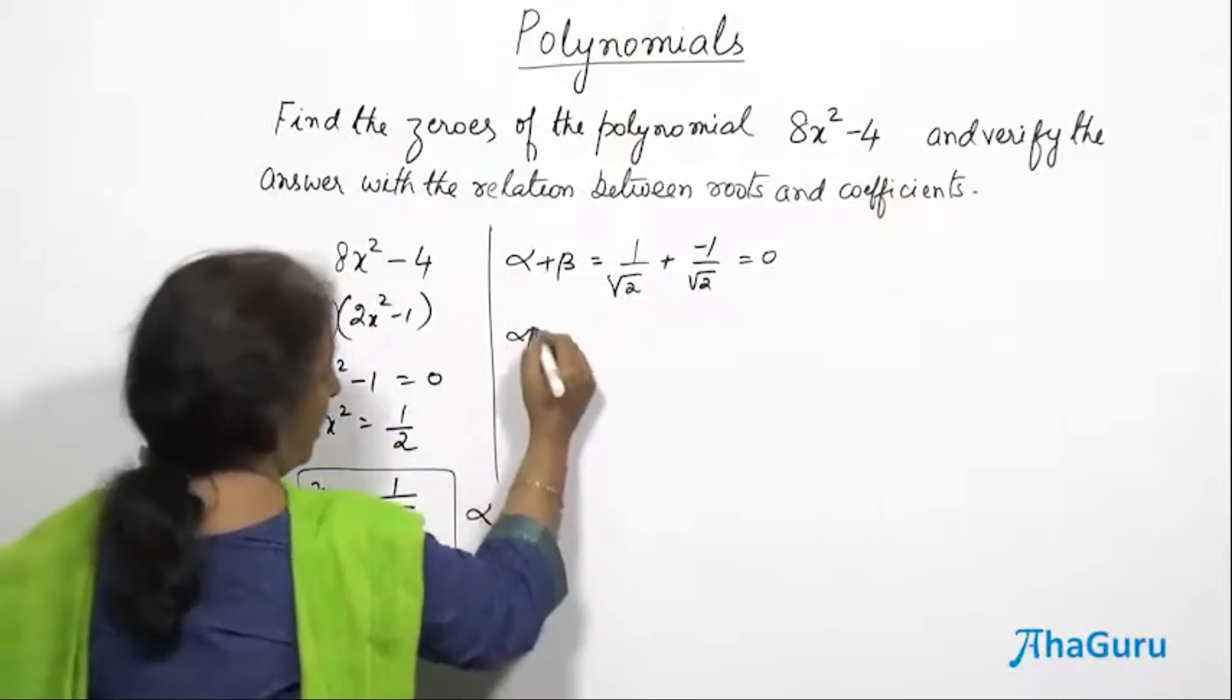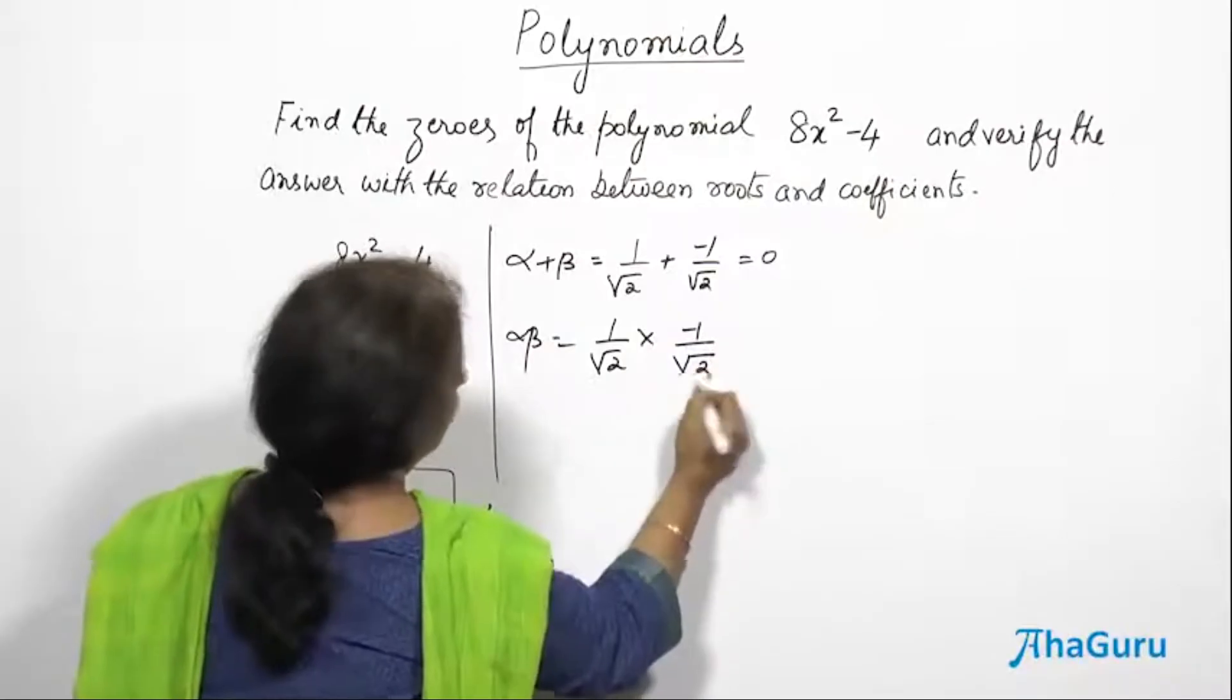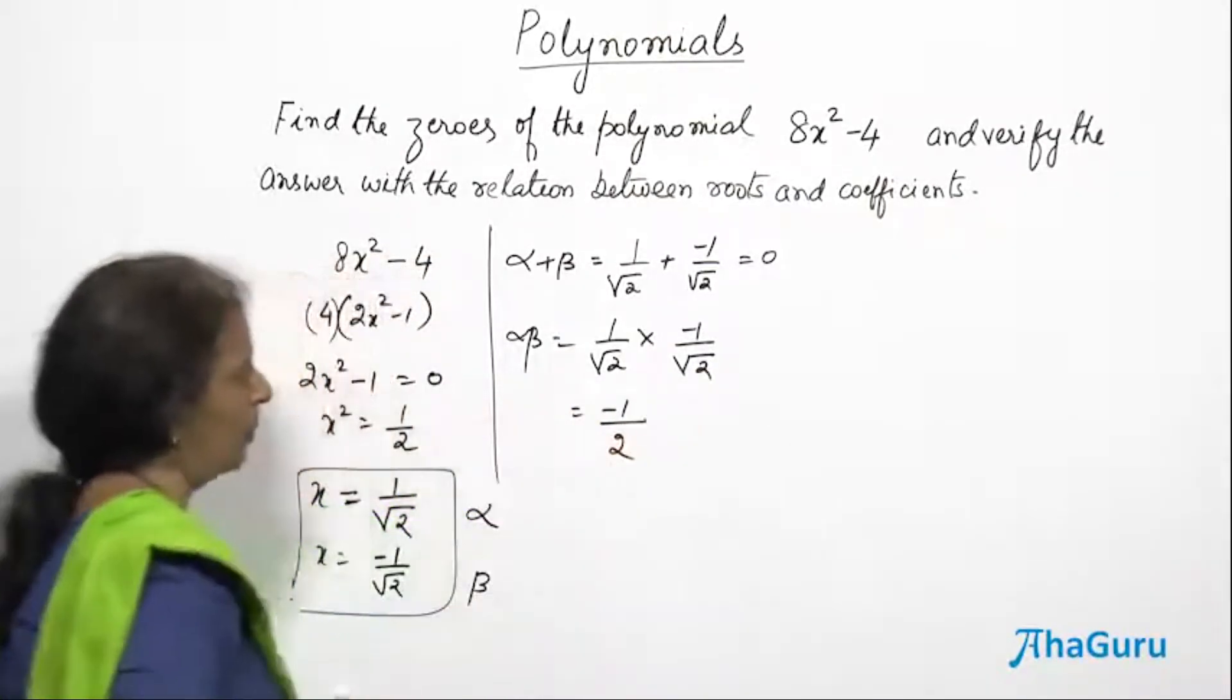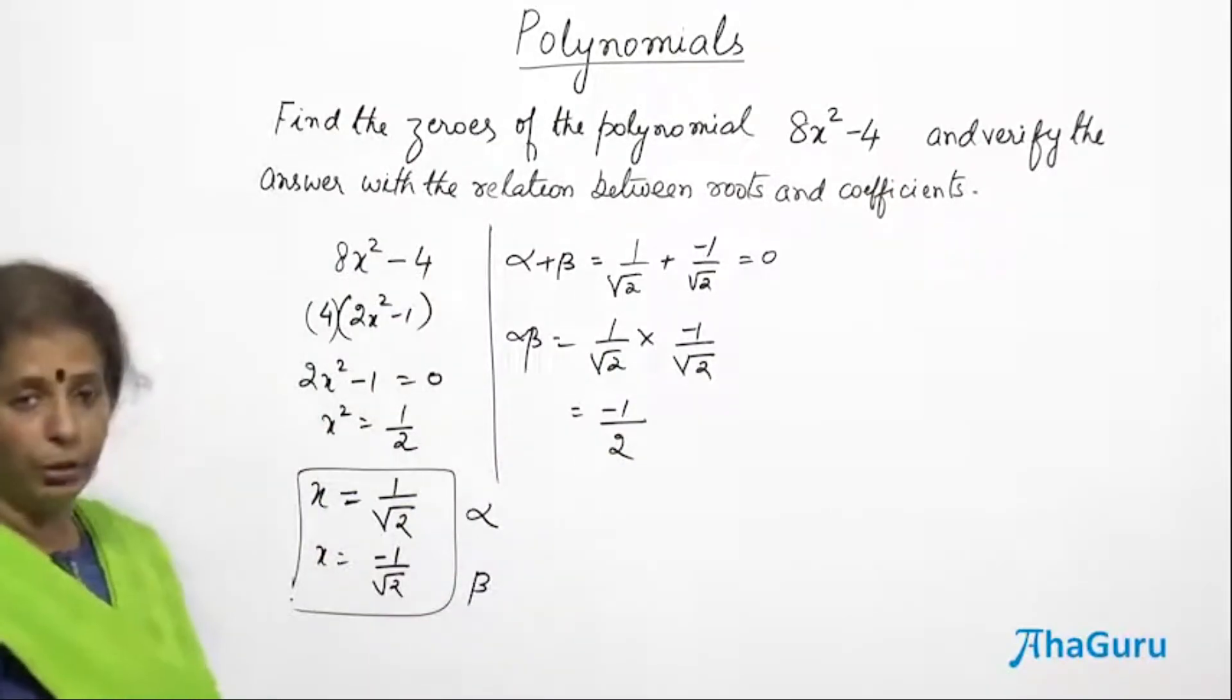Let us find alpha beta, which is 1/√2 into -1/√2. -1/√2 into √2 is 2. So I got the value of alpha plus beta. I also get the value of alpha into beta, alpha beta.